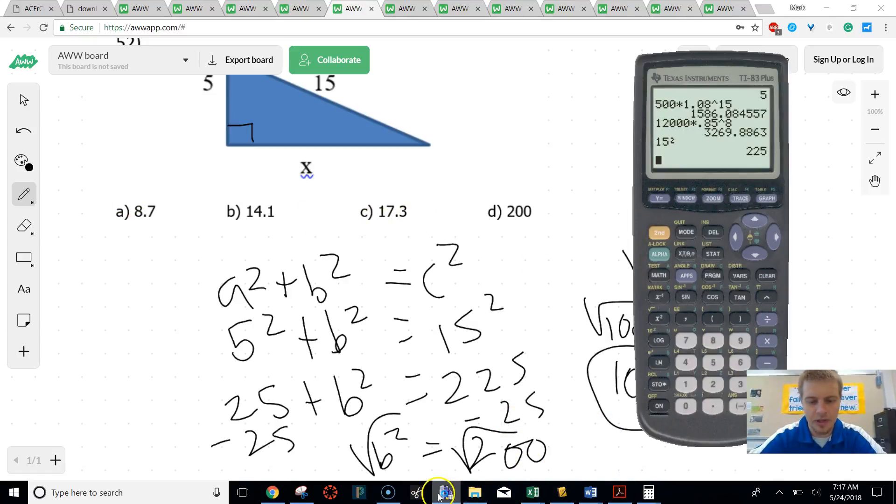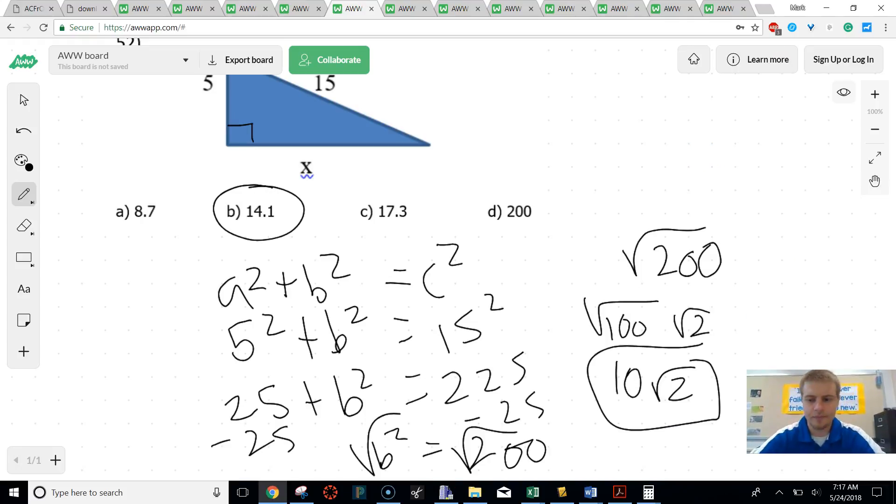If you want it as a decimal approximation, just take your square root and put 200 in it, and we get that's about 14.1. That's our final answer. Let's try our next one.